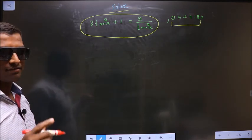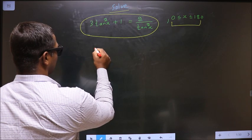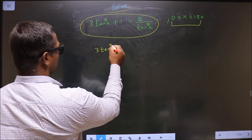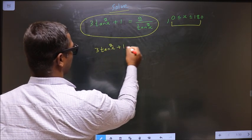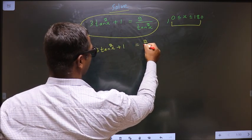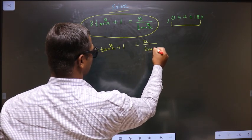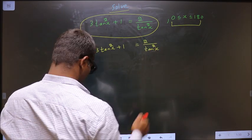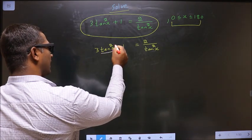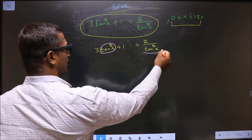The given equation is 3 tan square x plus 1 equal to 2 by tan square x. Here you have tan square x and also here.